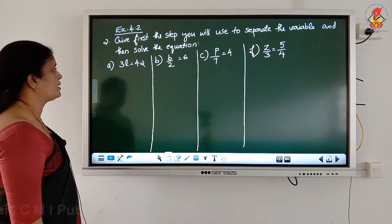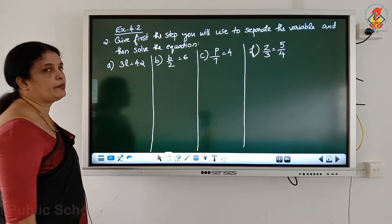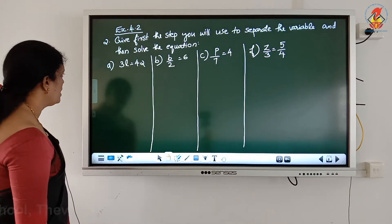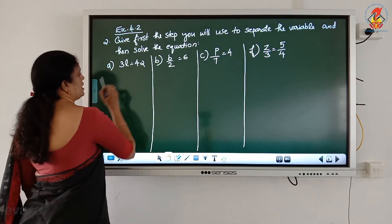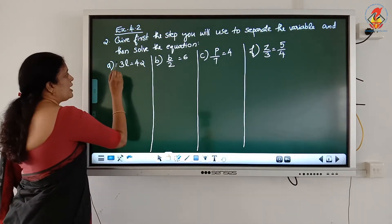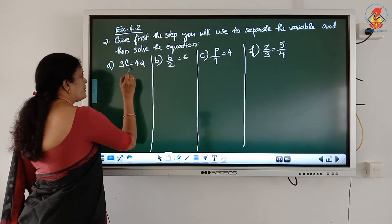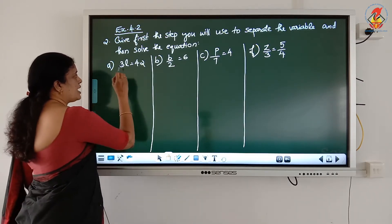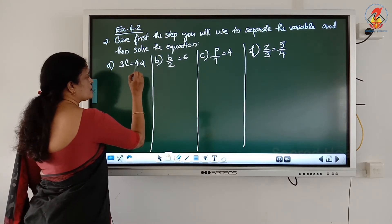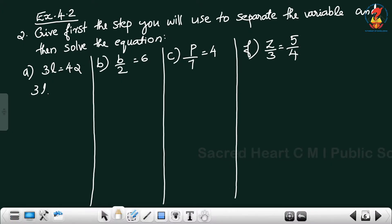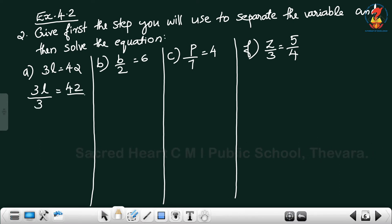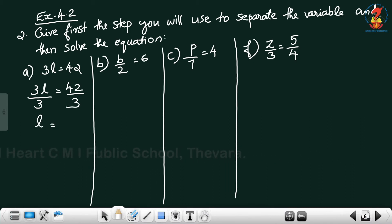First equation: 3L = 42. Separate the variable method. 3L means 3 into L. How could you eliminate this 3? When you divide by 3, you can eliminate this 3. At the same time, the RHS is also divided by 3. So 3L divided by 3 equals 42 divided by 3 — 3 and 3 cancel, giving L = 14.